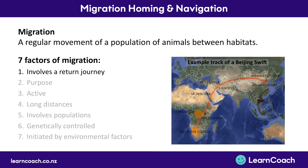The first factor is you must have a return journey. For example, the Beijing Swift goes from Beijing in China all the way down to the bottom of Africa and back again. It takes about nine months — almost a year before it gets back home. The key point is that it does get back home, so all migration involves a return journey.